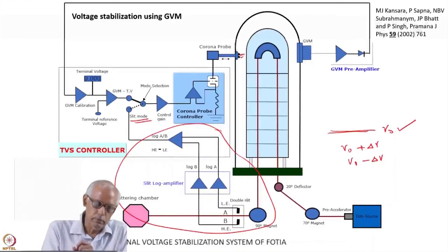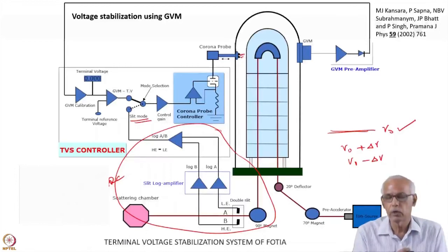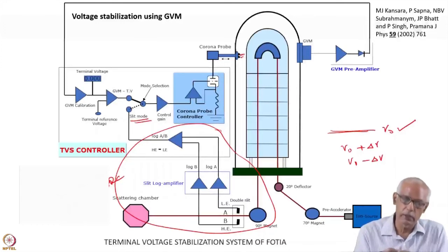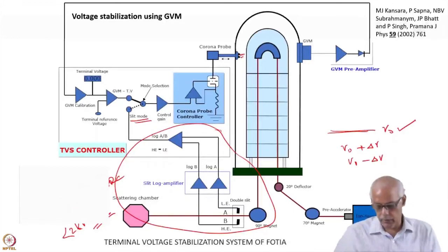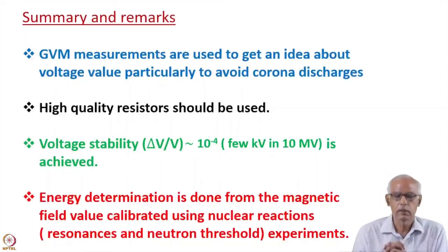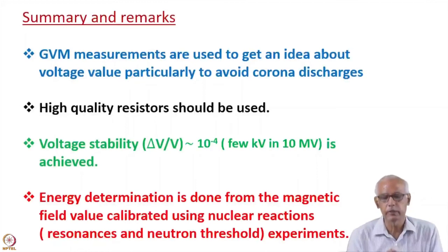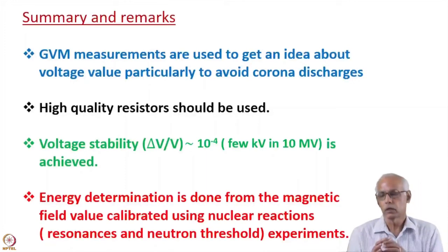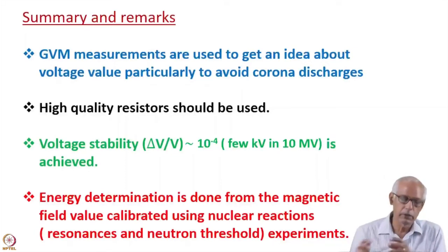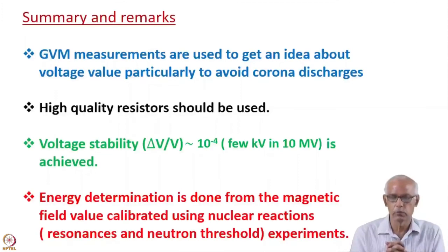This circuit was designed by MJ Kansara, Sapna Padankumar and colleagues of IADD BRC. It worked very well, and in both cases they could achieve voltage stabilization of about 2 keV at the highest voltage of 6 million volts.